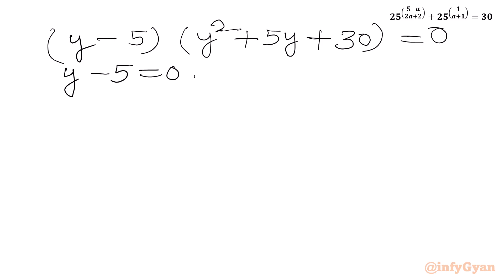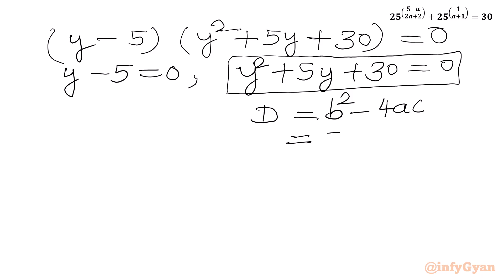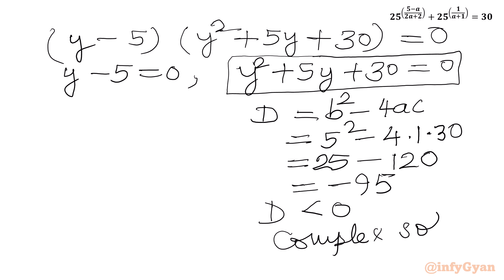Either (y minus 5) equals 0, or (y squared plus 5y plus 30) equals 0. For this quadratic equation we will check the discriminant, as we are looking for real solutions. Discriminant d equals b squared minus 4ac. Here b is 5, so we get 5 squared minus 4 times 1 times 30, which gives 25 minus 120, equal to negative 95. Since the discriminant is negative, we get complex solutions, so we reject this quadratic equation.